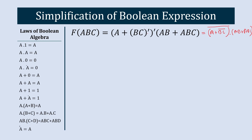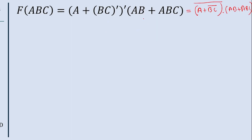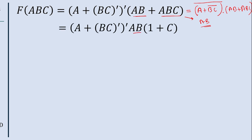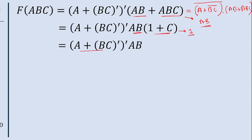Here we have AB plus AB·C. We can directly simplify this to AB, or we can take AB common and write AB·(1 plus C). Since 1 plus C equals 1, the result is AB. So this part simplifies to AB.